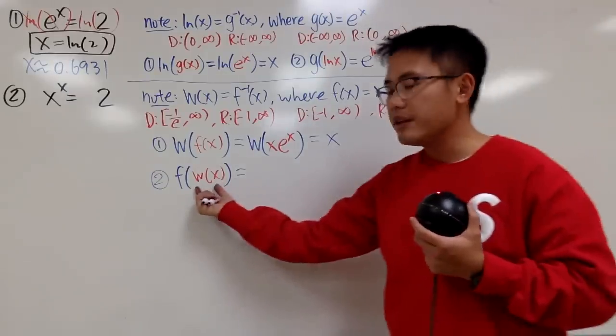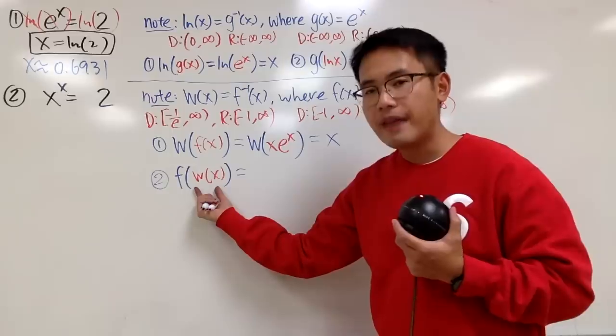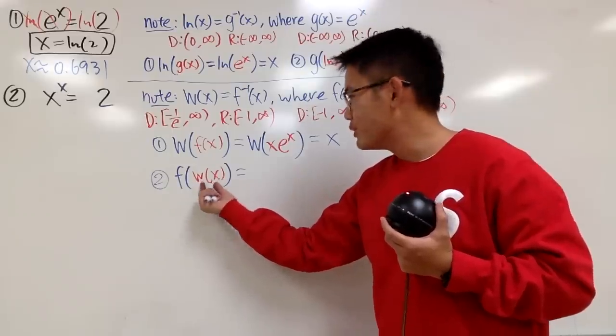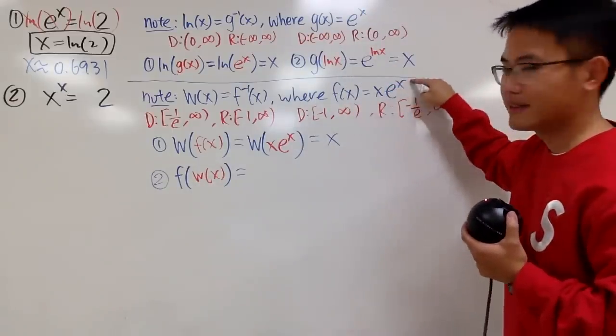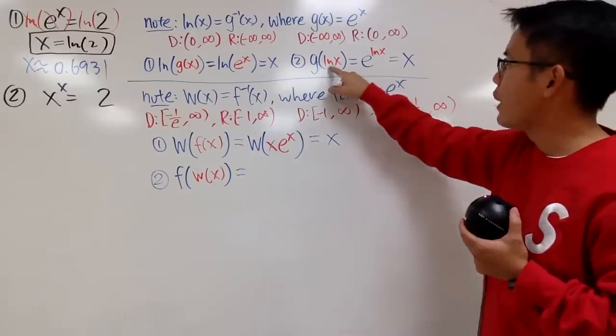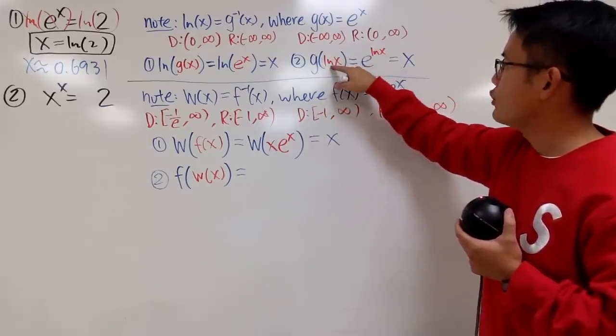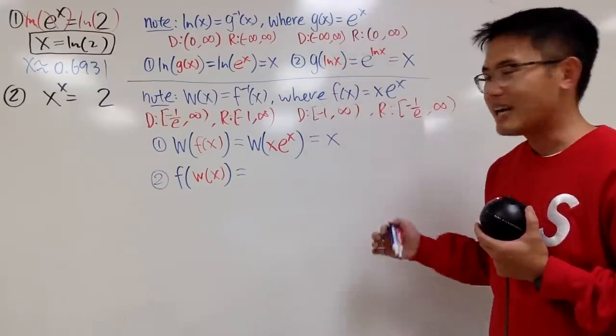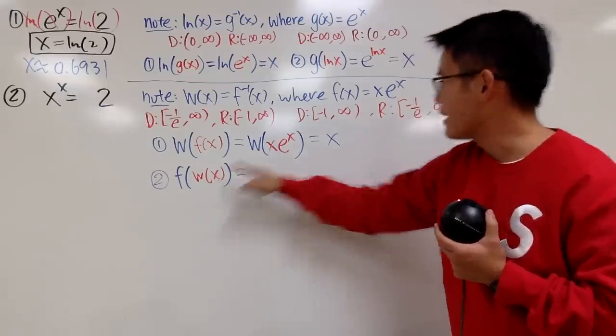Now, I'm entering w of x into f. That means I have to do what? Put this into this x and that x. So, earlier you see, I put ln x into g. That means I have to put ln x into this x. This time, I have to put this w of x into here and here.